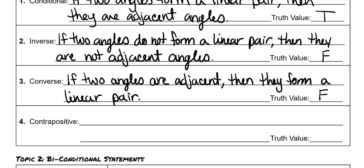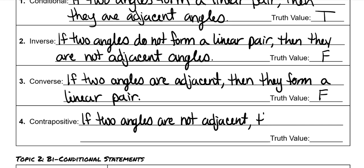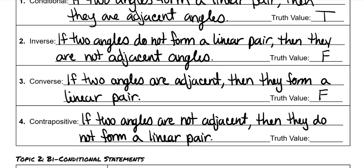The contrapositive is flip-flop and not-not, so we do if Q then P but put nots in there. Instead of saying 'if two angles are adjacent' we say 'if two angles are not adjacent.' Then instead of saying 'they form a linear pair' you say 'they do not form a linear pair.' Is this true or false? If two angles are not adjacent then they do not form a linear pair. In order to be a linear pair they have to be adjacent, so if you know they're not adjacent then you obviously know they're not a linear pair. This one is true.